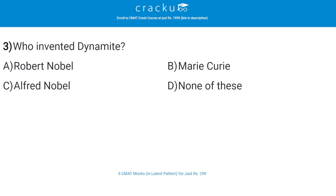Who invented dynamite? The correct answer is C, Alfred Nobel. Alfred Nobel was a Swedish chemist, inventor, engineer, entrepreneur and businessman who acquired 355 patents worldwide when he died in 1896. He invented dynamite and experimented in making synthetic rubber, leather and artificial silk among many other things.